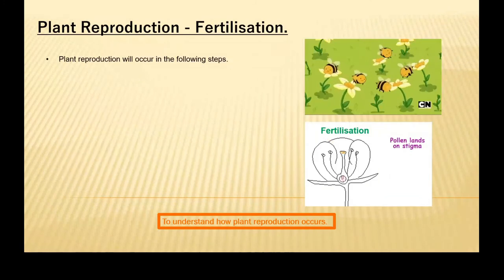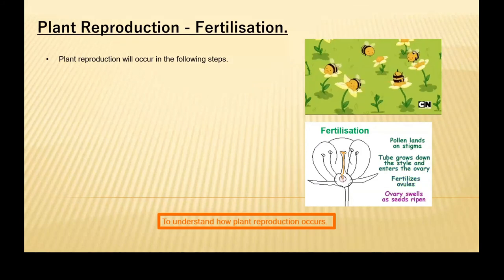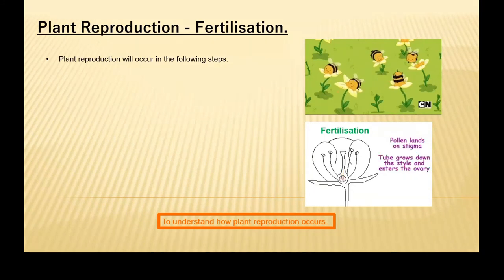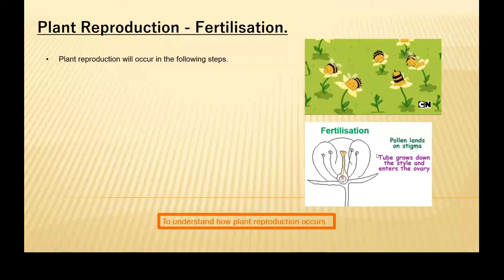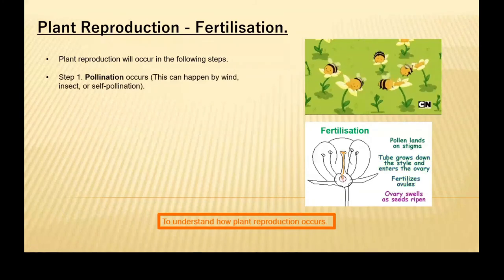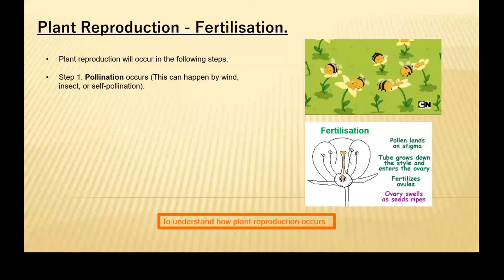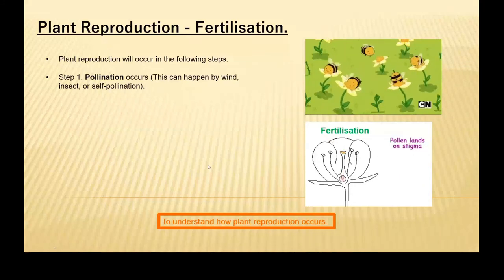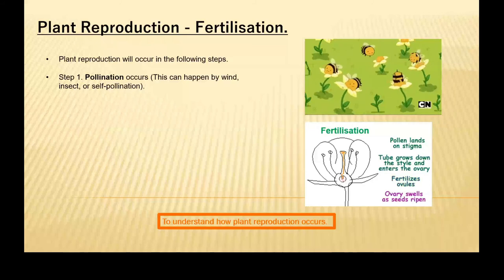Moving on — fertilization. This will occur in the following steps. Step one: pollination occurs — this can happen by wind, insect, or self-pollination, and there are some others. When we talk about self-pollination, the pollen will fall off the petal straight onto the stigma and it pretty much just self-pollinates itself.